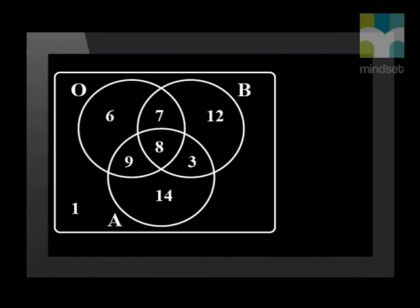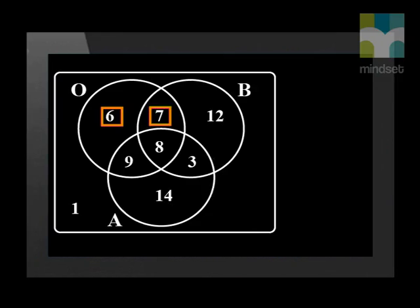Now we have a complete Venn diagram. Let's do an analysis of what we see. Using the Venn diagram, we see that 14 students liked apricots but not bananas or oranges. If we want to calculate how many students liked oranges or bananas but not apricots, we need to add all of the relevant sections together. 6 plus 7 plus 12 is 25.